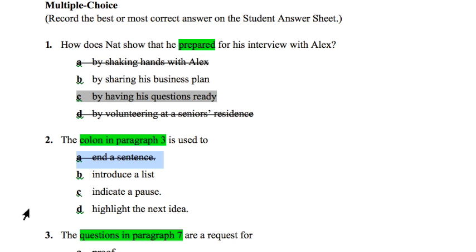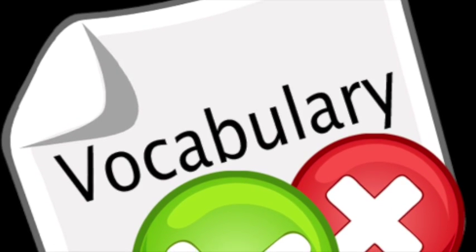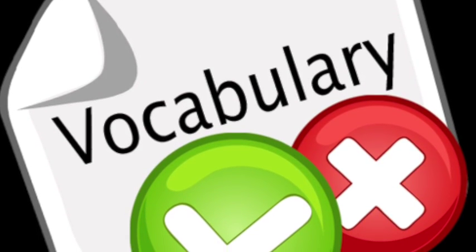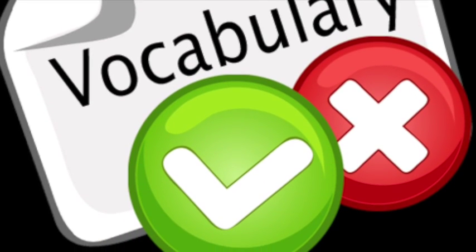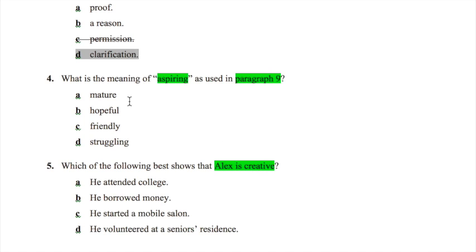Another type of multiple choice question on the OSSLT tests your vocabulary. The best way to answer these is to go back and look at the context of the word within the sentence and the paragraph. In this case we're looking for the meaning of 'aspiring.' We can cross out 'mature' from common sense and context clues, as well as 'friendly,' leaving two similar choices. The best answer is 'hopeful,' so go ahead and select it and bubble it in.